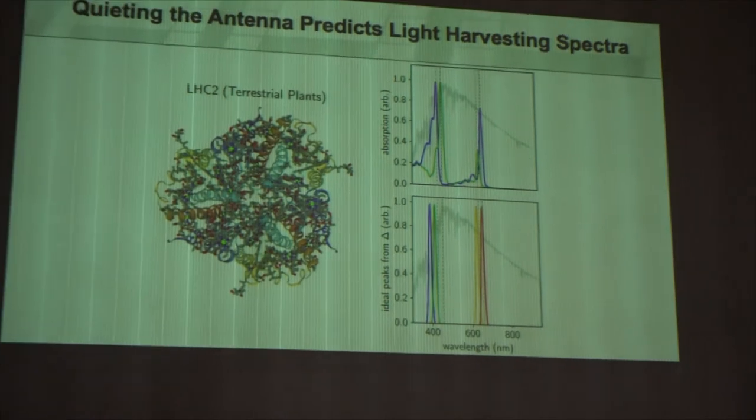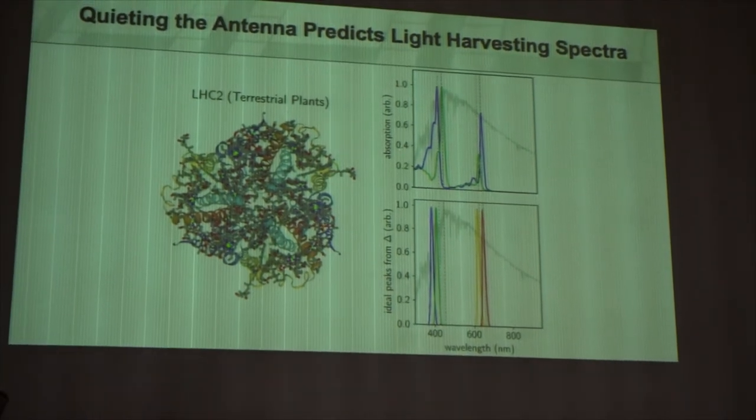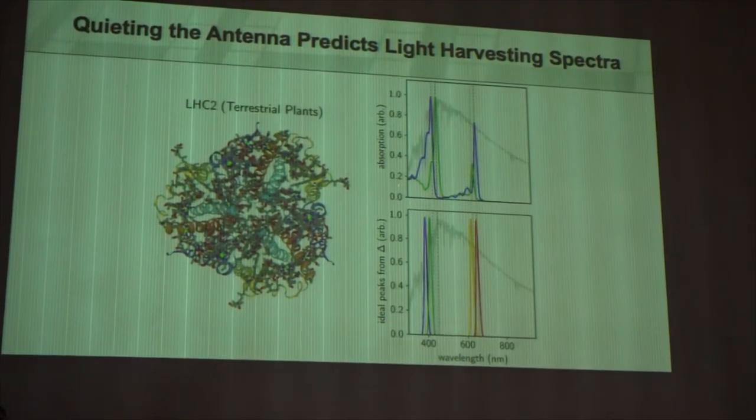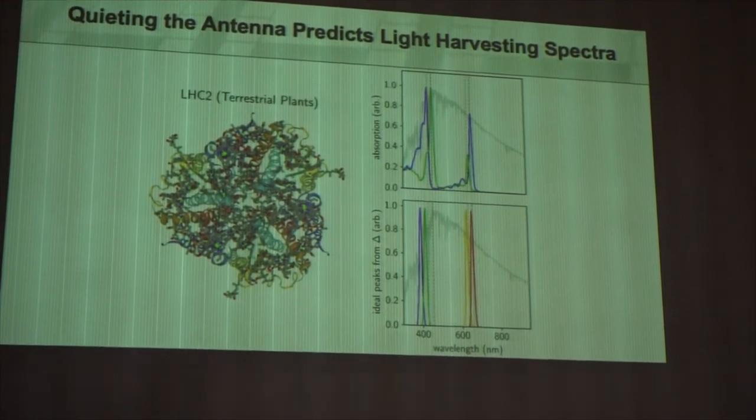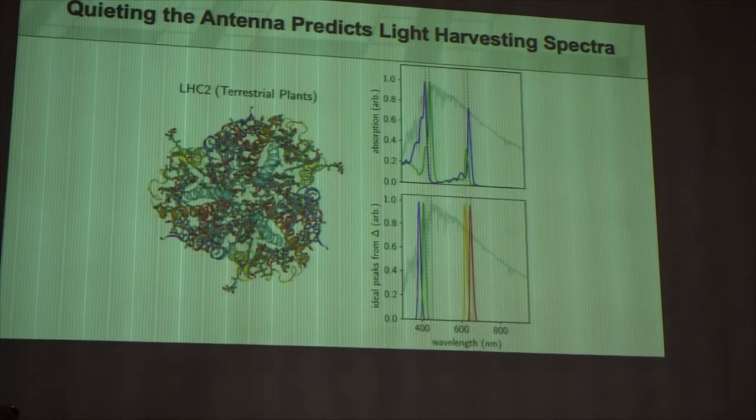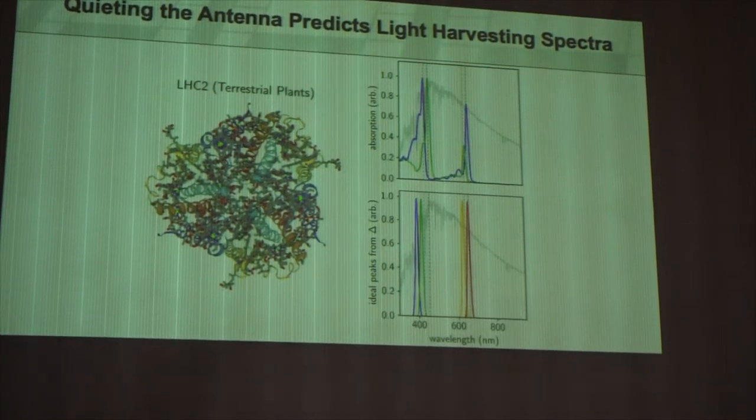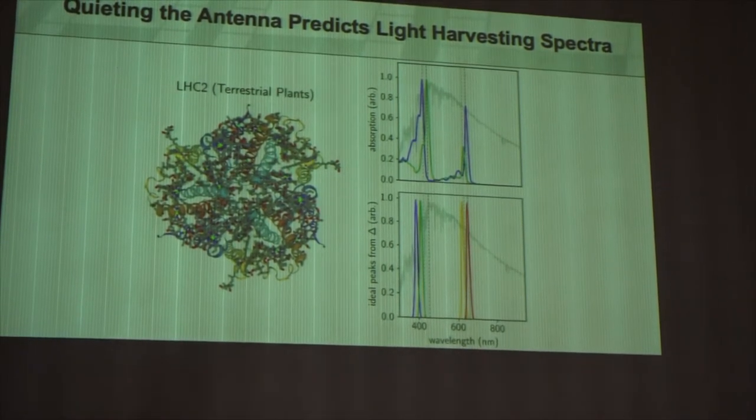Now here's the part where it became kind of interesting. If you take this model, and you just take the spectrum on Earth, so that gray line is basically the solar power irradiance on Earth as a function of wavelength. And you look, this is the top plot is basically the absorption spectrum of the LHC2 in green plants.